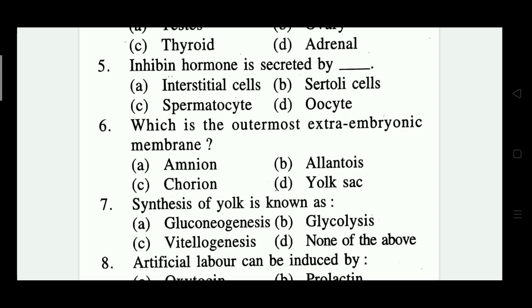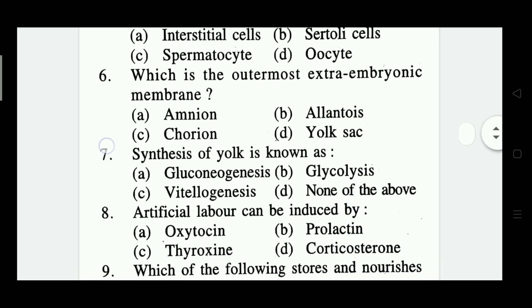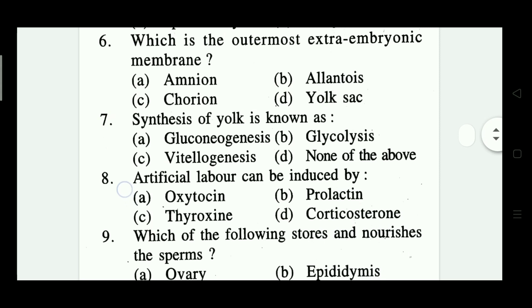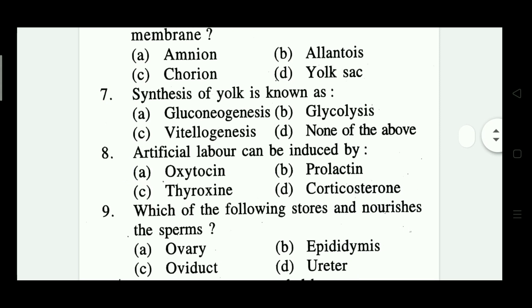Question number seven: synthesis of yolk is known as what? Options: gluconeogenesis, glycolysis, vitelogenesis, none of these. Which one is correct? Vitelogenesis — option C is the correct answer.